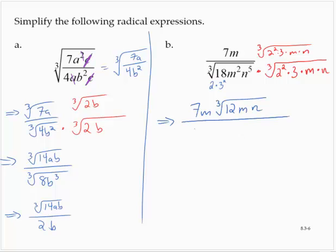And in the denominator, I would have the cube root of 2 to the third, n to the third. I'm sorry, that should be a 3 to the third first. 3 to the third, m to the third, n to the sixth.